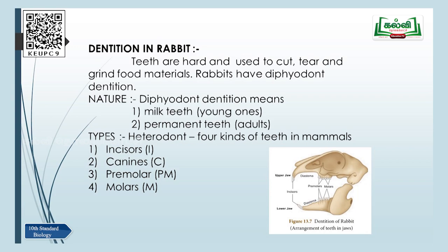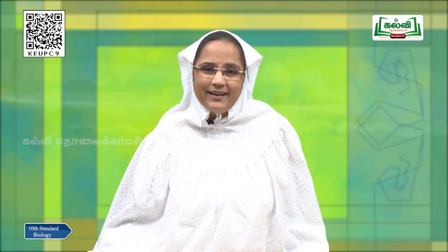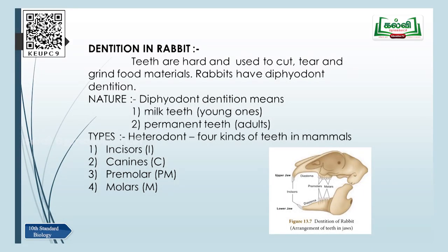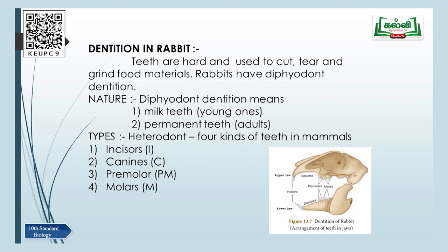A very interesting feature of the rabbit is dentition. Rabbits show diphyodont dentition — the young ones have milk teeth and the adult rabbit has permanent teeth. The teeth are hard and used for cutting, tearing, and grinding food materials. There are four types of teeth, making it heterodont: incisors (I), canines (C), premolars (PM), and molars (M). In the upper jaw there are two incisor teeth and in the lower jaw only one.